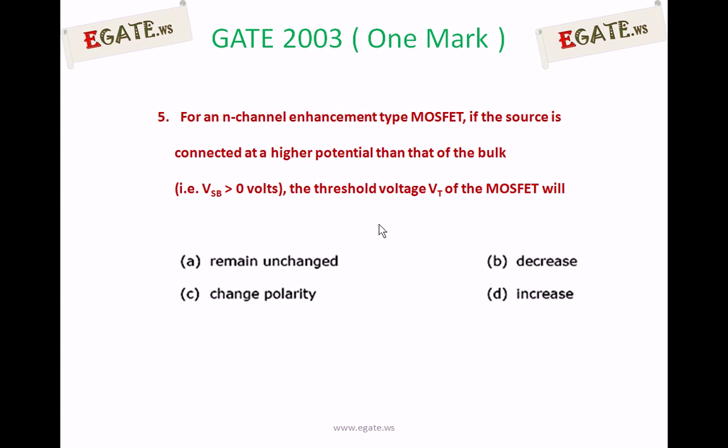For an n-channel enhancement type MOSFET, if the source is connected at a higher potential than that of bulk, i.e., VSB is greater than 0 volts, the threshold voltage VT of the MOSFET will: (a) remain unchanged, (b) decrease, (c) change polarity, or (d) increase.